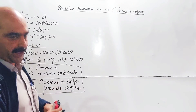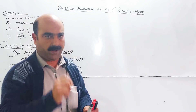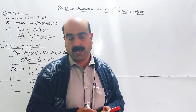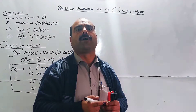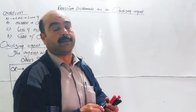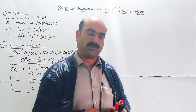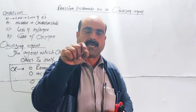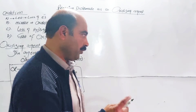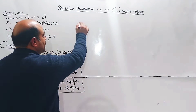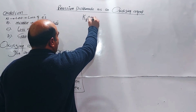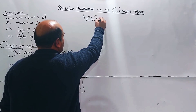Potassium dichromate acts as a strong oxidizing agent in acidified solution — in acidic medium. The acid used is H2SO4. Note: HCl is not used because HCl is itself oxidizing and produces chlorine. So H2SO4 is used as the acidified solution for K2Cr2O7, potassium dichromate.